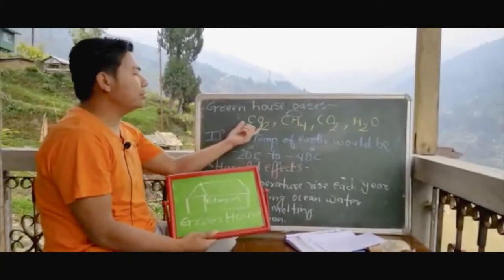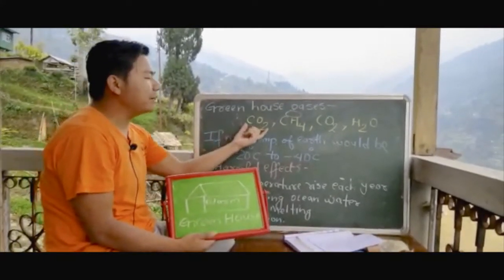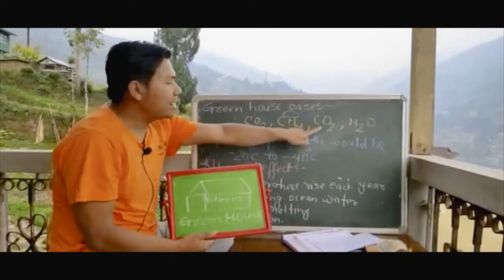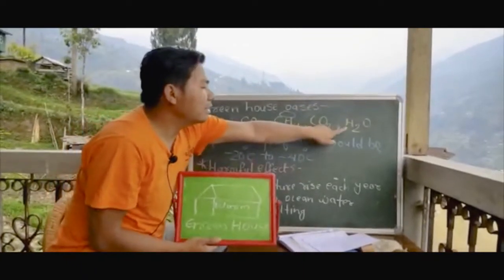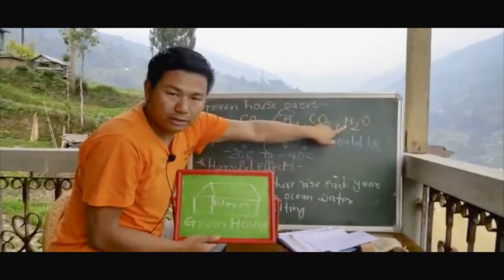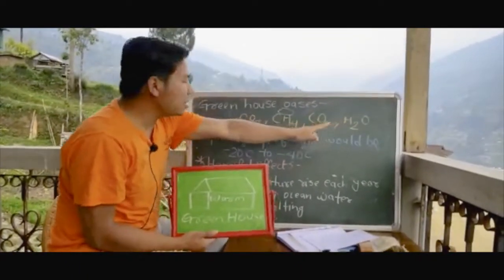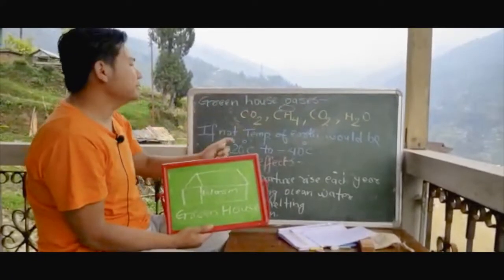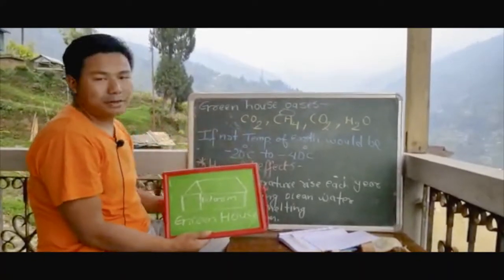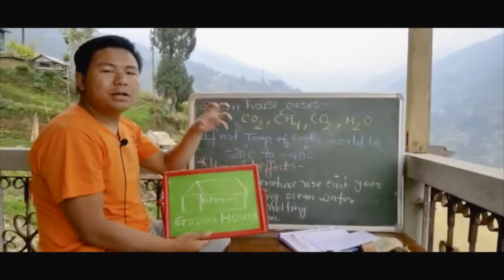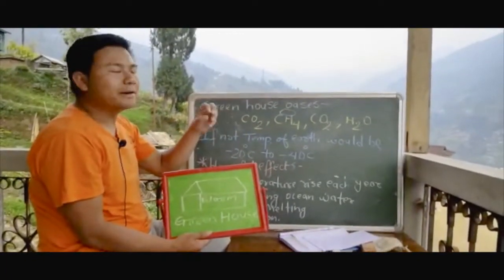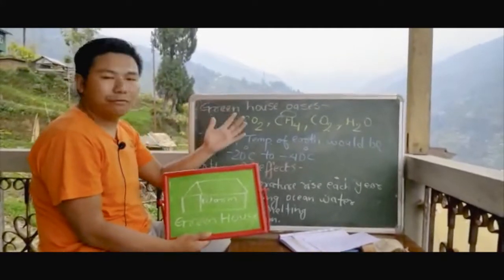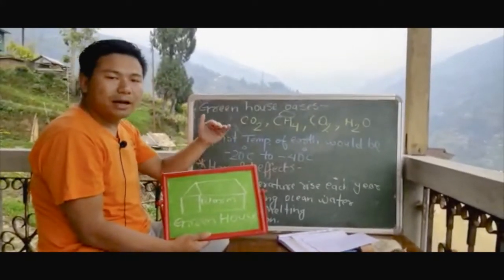The gases present in the atmosphere — such as carbon dioxide, methane, and water vapor — are called greenhouse gases, because they re-emit the heat energy coming from the sun back toward the Earth's surface.